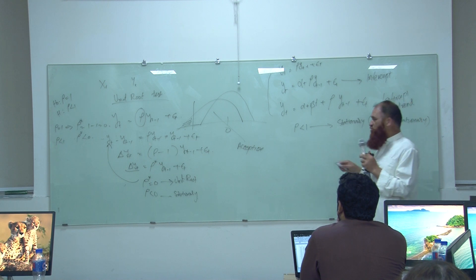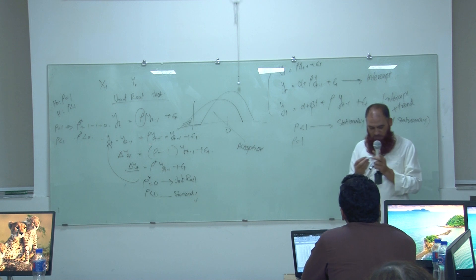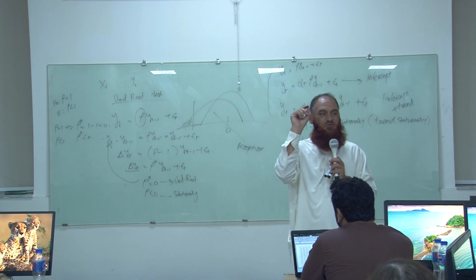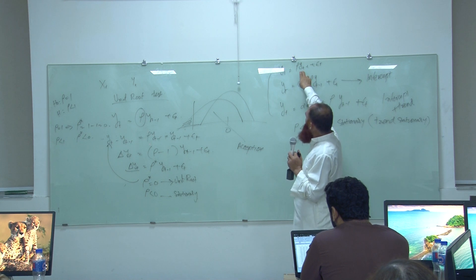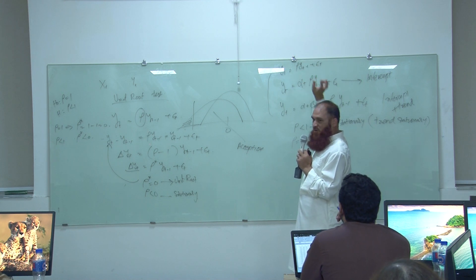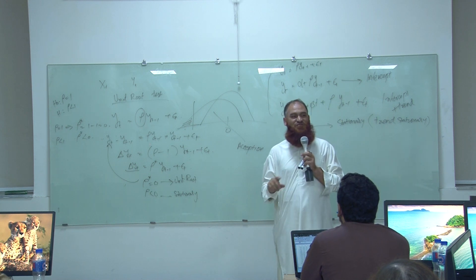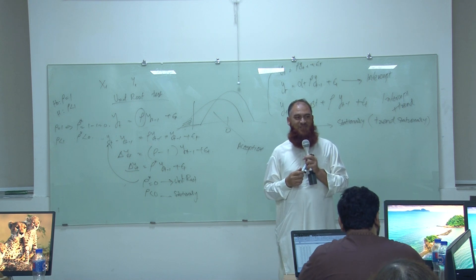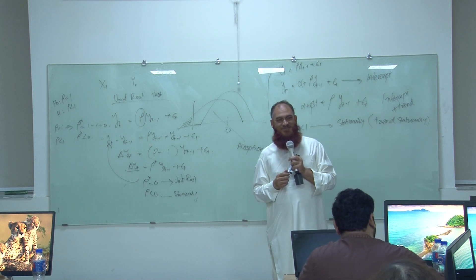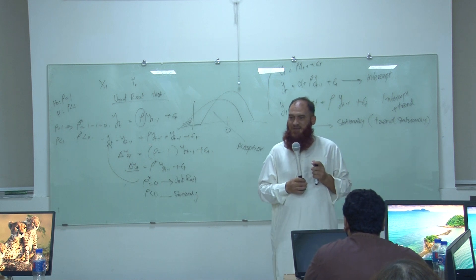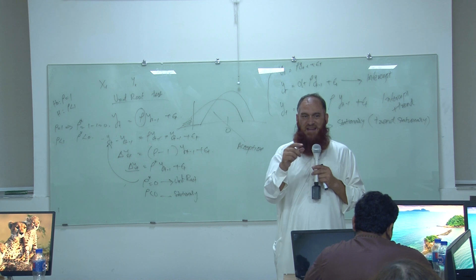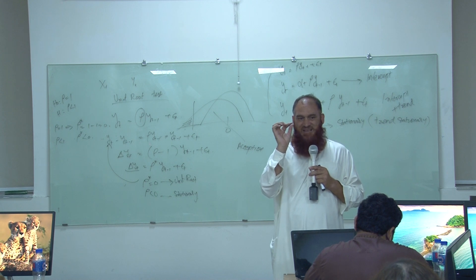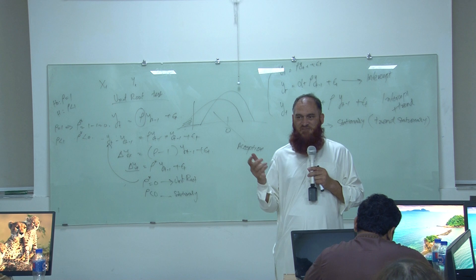You have trend stationarity when rho is less than 1, and unit root when rho equals 1. But the issue is: what is the most appropriate regression to use? Should you use the basic form, the form with an intercept, or the form with an intercept plus trend? Which form is most appropriate? Whenever you are finding the answer on the basis of statistics, there is some probability of error — Type 1 error, Type 2 error, etc.